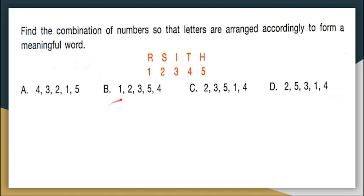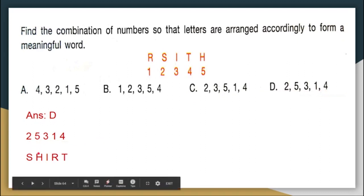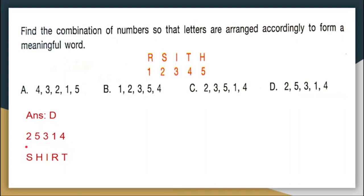Similarly, look at option B, option C and option D and see which will be the correct answer. If you look at option D, you have 2, 5, 3, 1, 4. Now 2 represents S, 5 represents H, 3 represents I, 1 represents R and 4 represents T. So the meaningful word that we form is SHIRT. Your correct answer here is option D: 2, 5, 3, 1, 4.